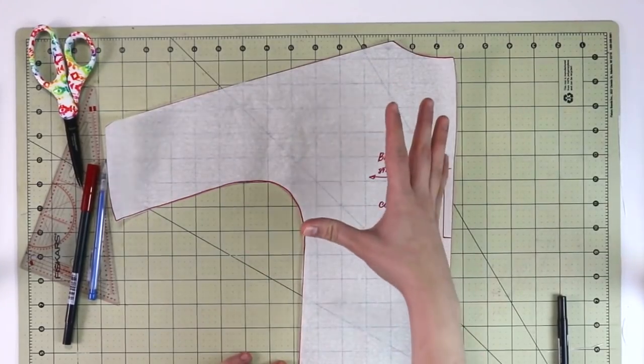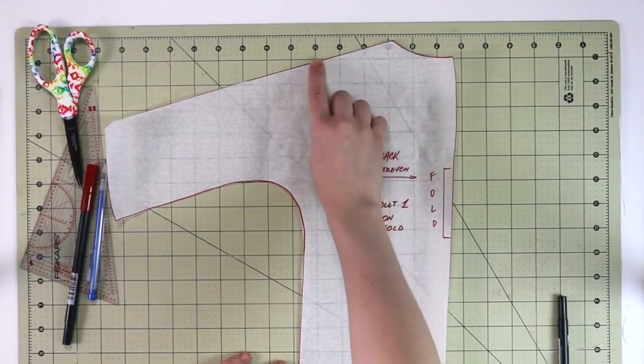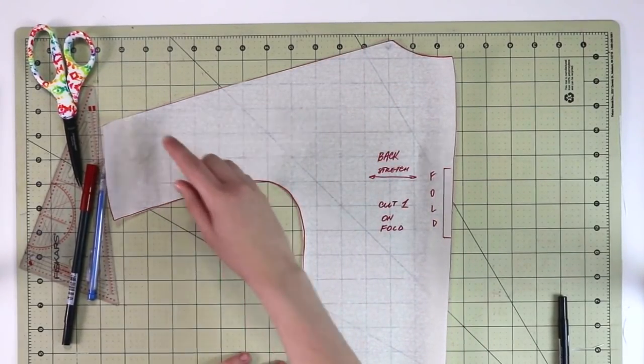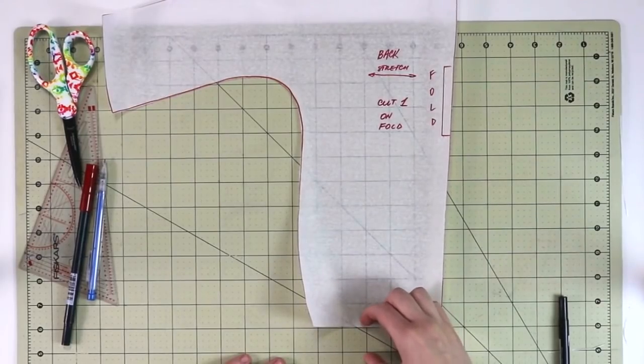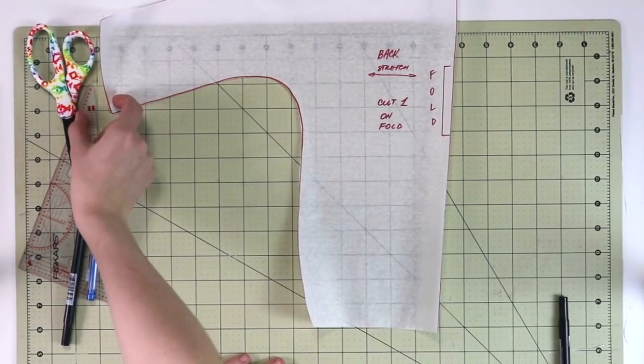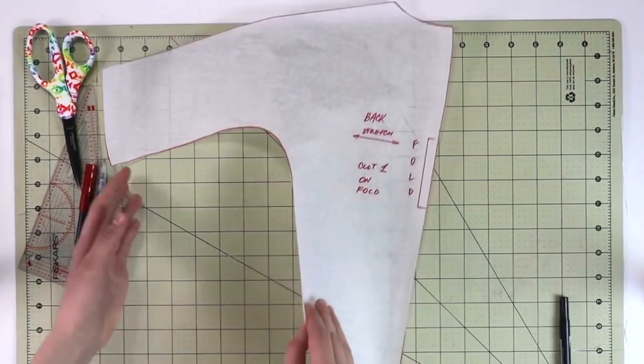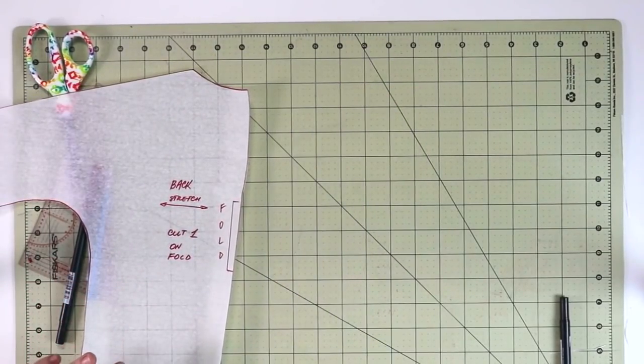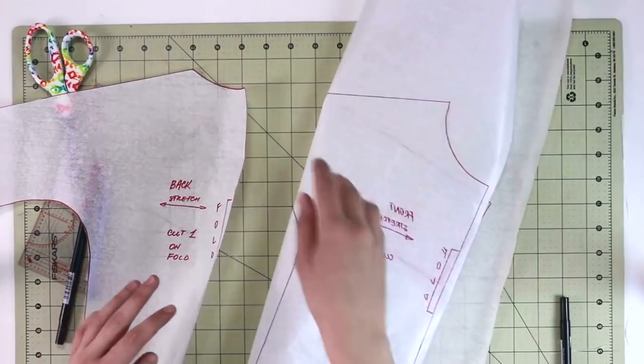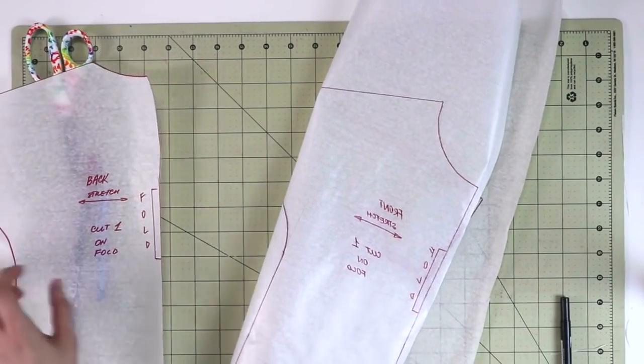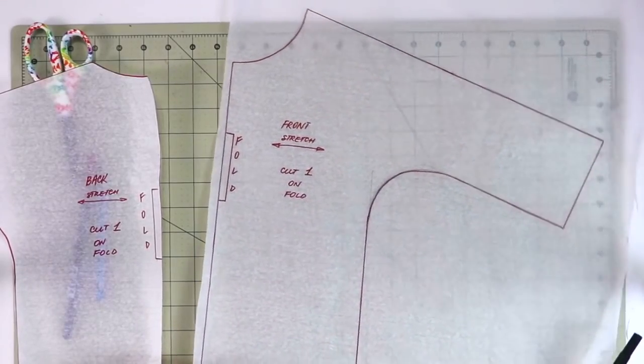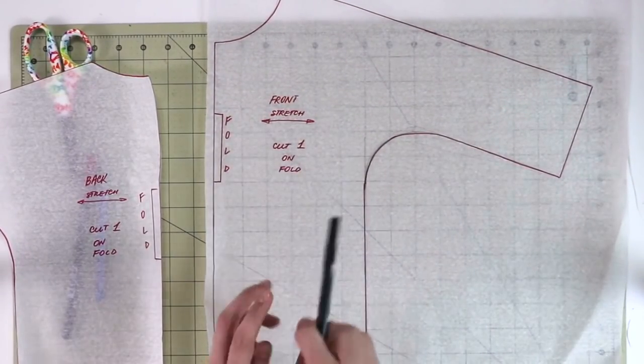Just like I mentioned in the previous video where we actually drafted this pattern, I draft all of my patterns without seam allowances added. And I cut them out like this as well. Once we're going to be cutting the fabric, I'm going to add a quarter of an inch seam allowances everywhere. And then I'm also going to add the hem allowances that I want as well.